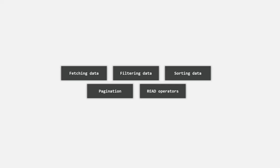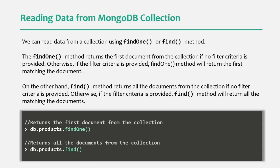Before we talk about all that, let's first theoretically understand how the find method works — how we can filter data using the find method and the filter object, and how to use operators to filter a specific set of data. We have already learned that in order to fetch data from a collection, we can use the find method or findOne method.